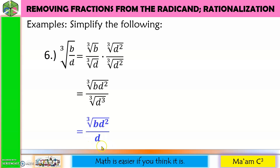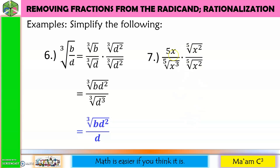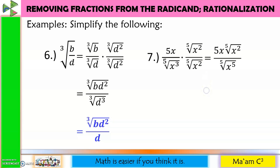Next: 5x divided by the 5th root of x cubed. The index is 5 and the exponent is 3, so I need 2 more. Multiply numerator and denominator by the 5th root of x squared. 5x times the 5th root of x squared is 5x · ⁵√(x²). For the denominator, 3 + 2 = 5, giving the 5th root of x to the 5th power. The index 5 and exponent 5 cancel, so the denominator becomes x. The x in the numerator and denominator cancel. Final answer: 5 times the 5th root of x squared.